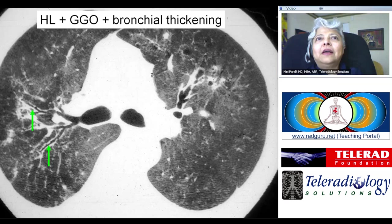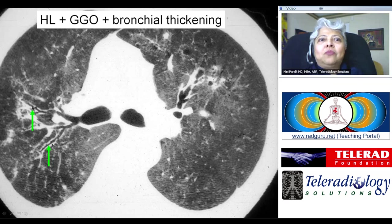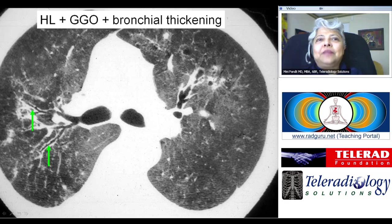This is a patient with sarcoidosis. There are ground glass opacities, bronchial wall thickening, and heterogeneous lungs as a result. So this is a patient of sarcoidosis with heterogeneous lungs.